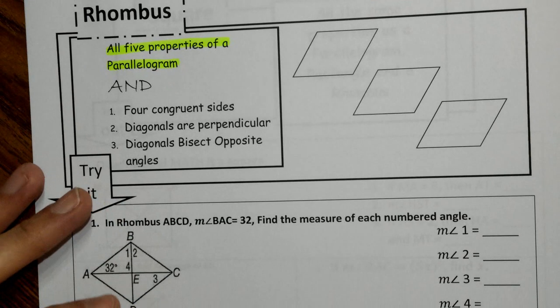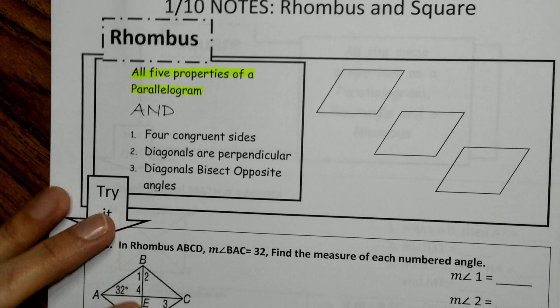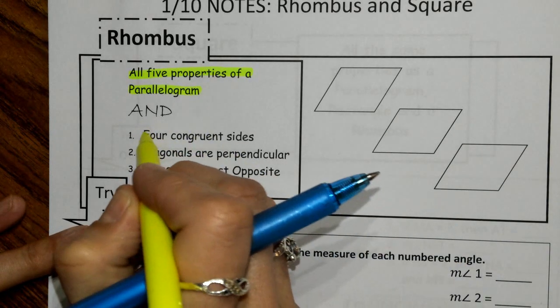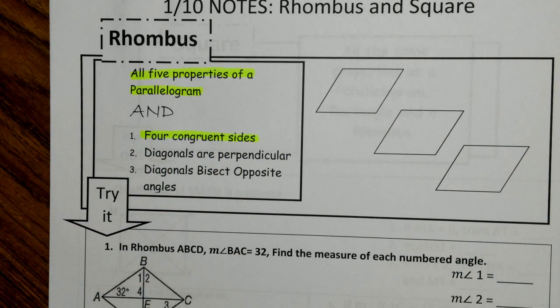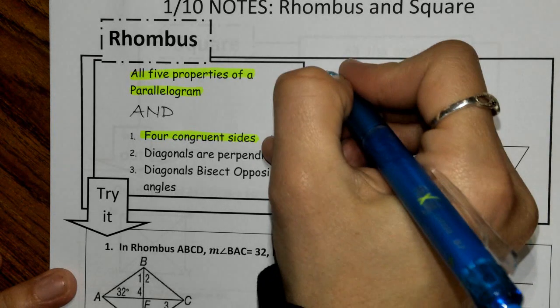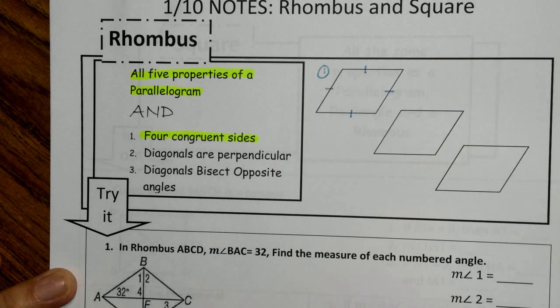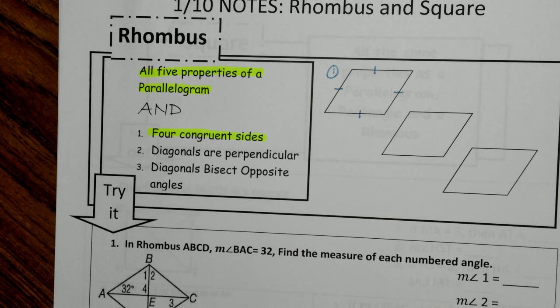The three new properties we need to know for the rhombus: first, unlike the rectangle, we're going to have four congruent sides. A rhombus is like a squished square. So on our first rhombus, all we need to do is put a tick mark on all four sides and we have a rhombus — you see this picture, we know it's a rhombus.